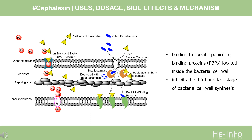Mechanism of Action: Cephalexin is a first-generation cephalosporin antibiotic. Cephalosporins contain a beta-lactam and dihydrothiazine ring. Unlike penicillins, cephalosporins are more resistant to the action of beta-lactamase. Cephalexin inhibits bacterial cell wall synthesis, leading to breakdown and eventually cell death.